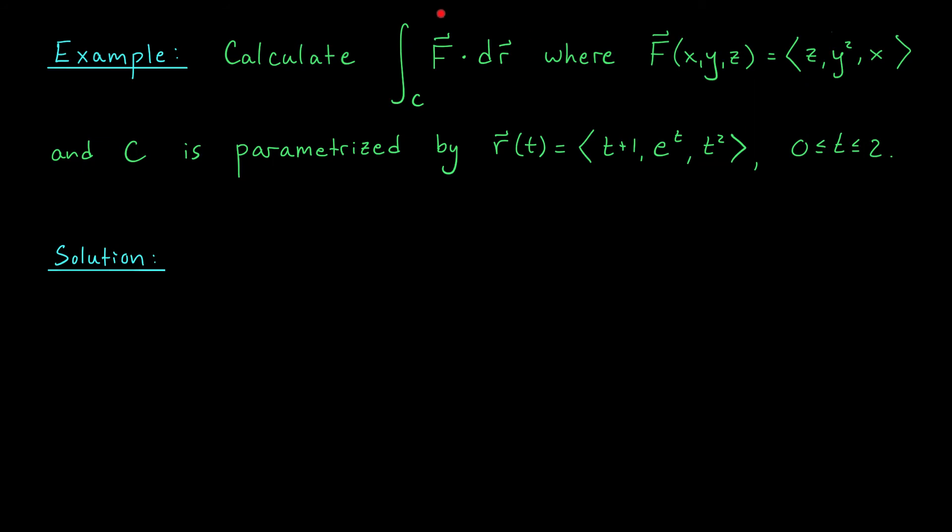Here, we're looking for the line integral along C of F·dr, where F is this vector field, F(x,y,z) = <z, y², x>, and C is the curve parametrized by this vector function R(t). So the parametrization here is already done. To compute our line integral, we're going to use the exact same formula on the last slide. The integral along C of F·dr is the integral from a to b of F(R(t))·R'(t) dt.